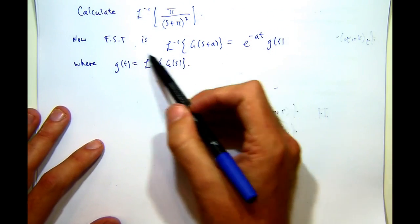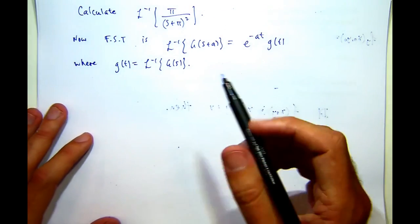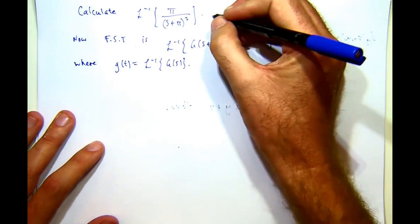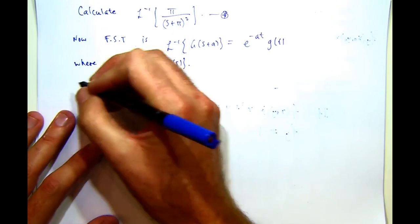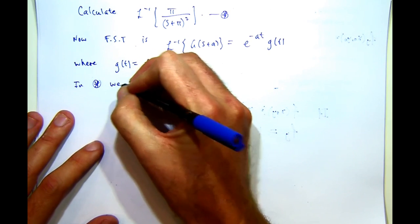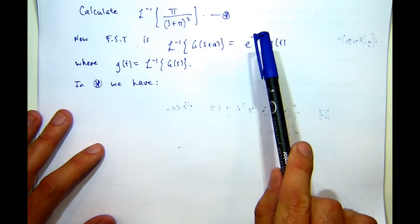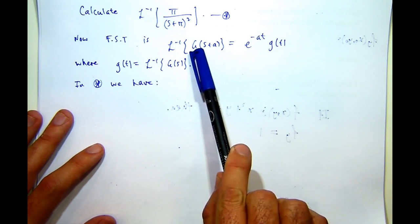So what we do is we work out this first, and then multiply through by an appropriate exponential. So what we'd like to do is identify A and big G.